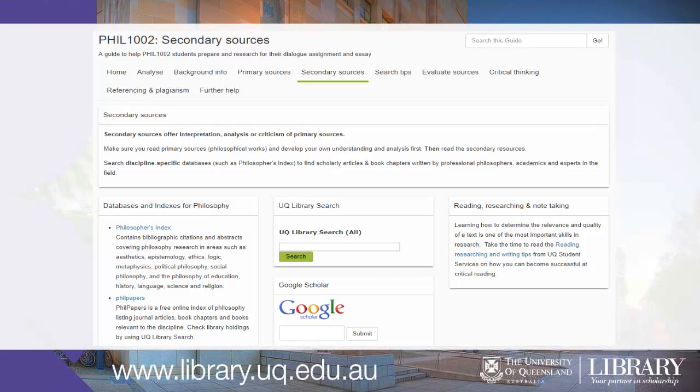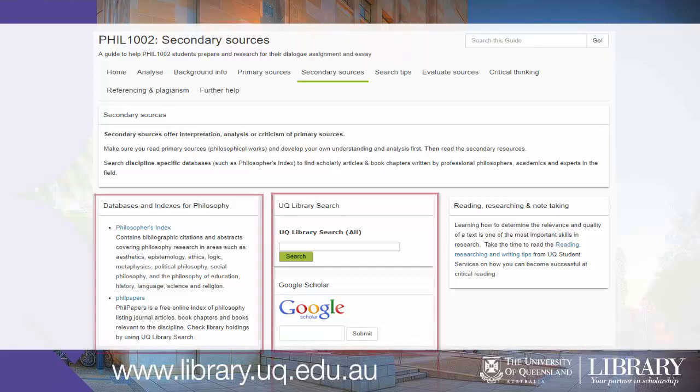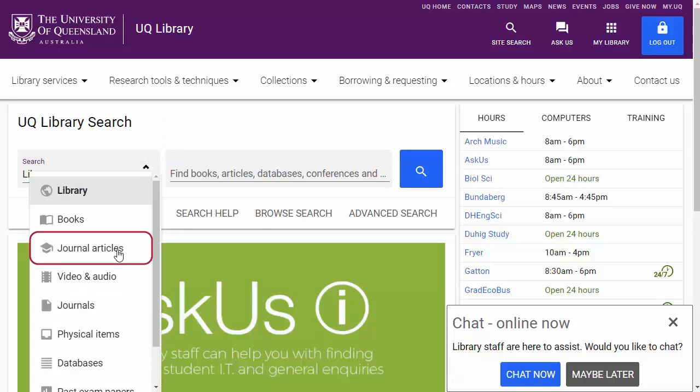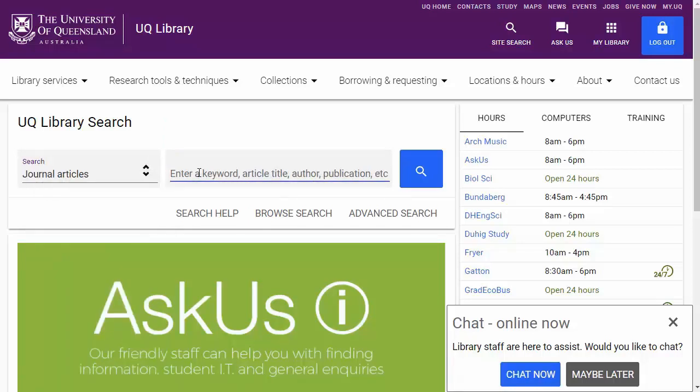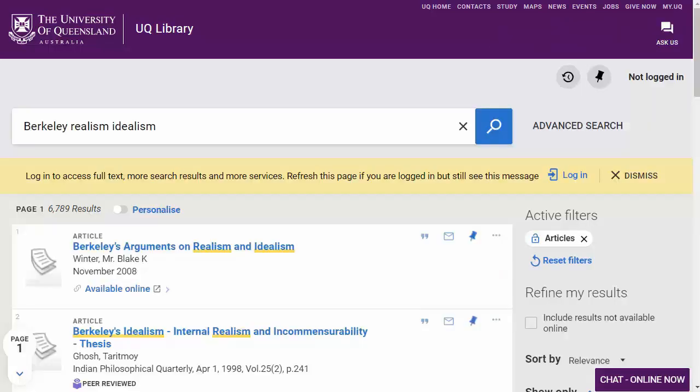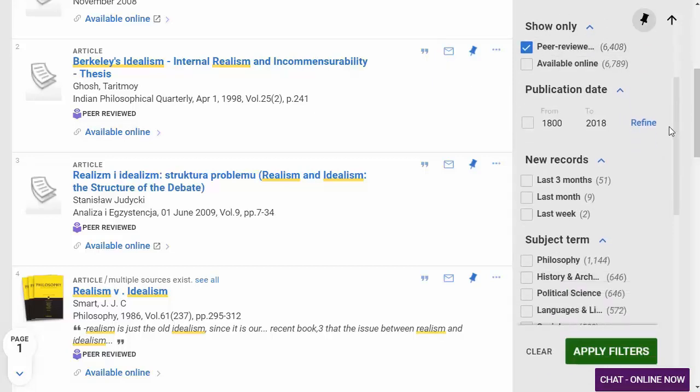Now you have your search strategy, you're ready to start searching. Databases relevant to your essay are available on the Library Guide. Links are available for UQ Library Search, Phil Papers and Google Scholar. Go to UQ Library Search. From the drop-down select Journal Articles. Enter your search terms Berkeley, Realism, Idealism. Note that you can refine your search to peer-reviewed journals and change the content type.